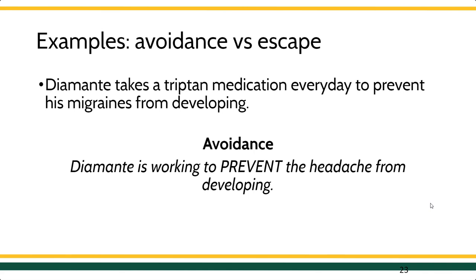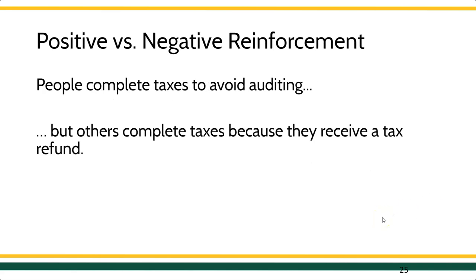Part of the difficulty here is that with some examples, you could make a strong case that there are possibly multiple reinforcers going on. For instance, in paying taxes, some people pay to avoid being audited, but others complete their taxes because they're receiving a tax refund. One could make the case that we have an increase in the behavior of filing taxes, but it could be because of two totally different consequences — for some folks it's avoiding the audit, which is negative reinforcement, and for others it's receiving the refund, which is positive reinforcement.